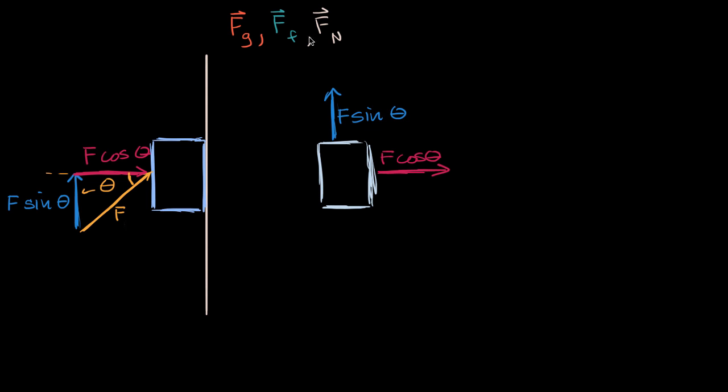But this would be F sine theta. And now let's think about these characters right over here. We have the force of gravity. And so that's going to be acting downward. So it would look something like this. So we have,